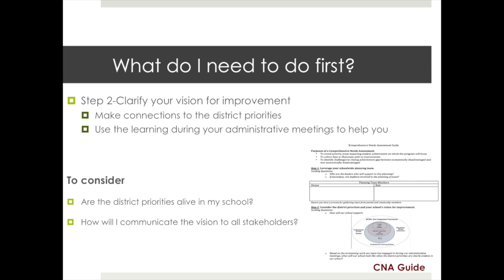Next, you need to ensure that you have an end in mind to work towards. What is your vision for your school? Is that vision clear to both you and your planning team as well as other stakeholders? We have engaged in planning around this in our administrative meetings this year. Use the work from these meetings to help you during this process. It is important to think about what your school will look like when the district priorities of professional learning communities, effective instruction and leadership, and standards-based planning and instruction are alive in every classroom and office.